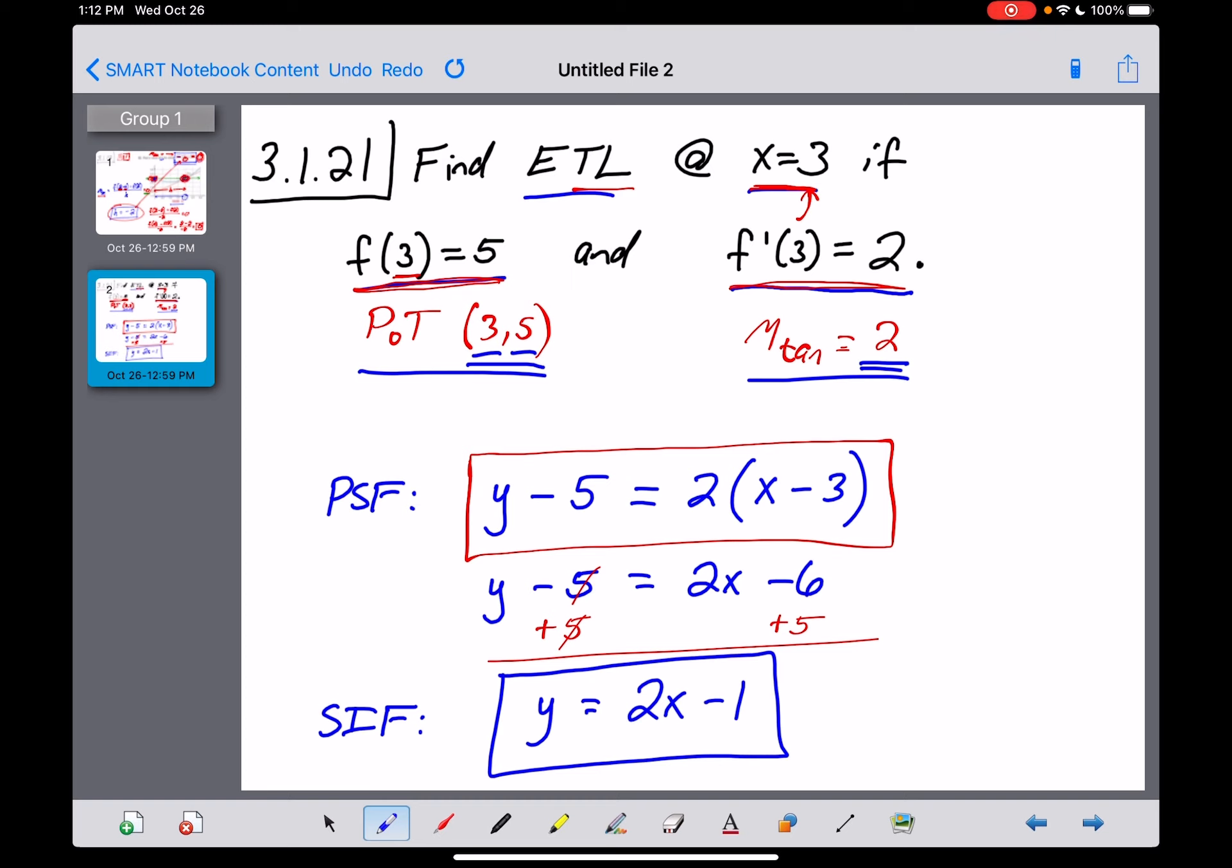So they're asking you just to assume that they want the answer in slope-intercept form. A better written problem would tell you what form they wanted it in. So really, this is the better version of the answer, but on a legal technicality, you'd get full credit for that one as well if the directions don't say what form to put it in. Okay, and that's number 21.